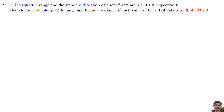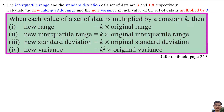Question number 2. The interquartile range and the standard deviation of the set of data are 3 and 1.8 respectively. Calculate the new interquartile range and the new variance if each value of the set of data is multiplied by 3. According to the textbook page 229, when each value is multiplied by constant k: the new range equals k times original range, new interquartile range equals k times original interquartile range, new standard deviation equals k times original standard deviation, and the new variance equals k squared times original variance. So the constant k is 3.